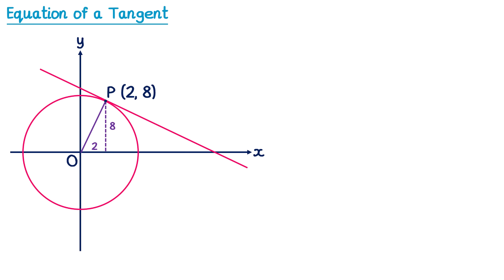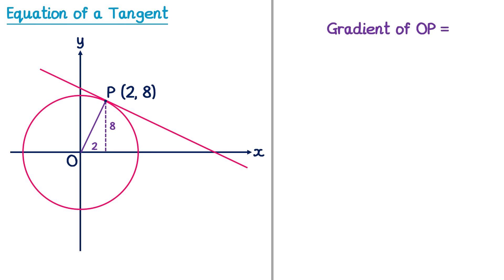We can then write down the gradient of the line O to P. The gradient of O to P is the change in Y, 8, divided by the change in X, 2. And 8 divided by 2 is 4. So we know the gradient of the line from O to P is 4.